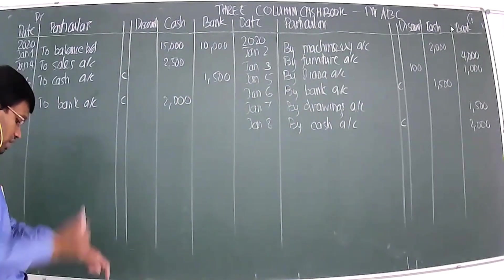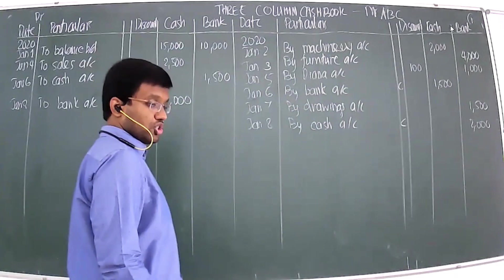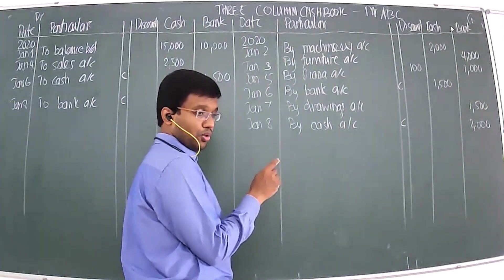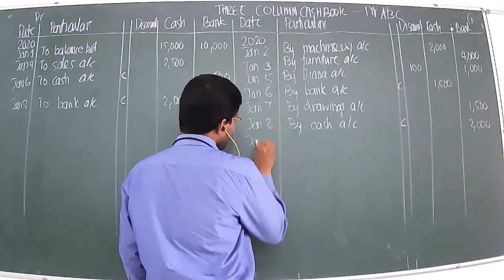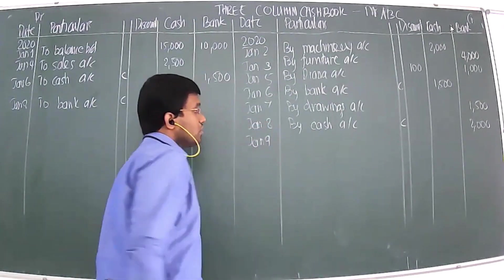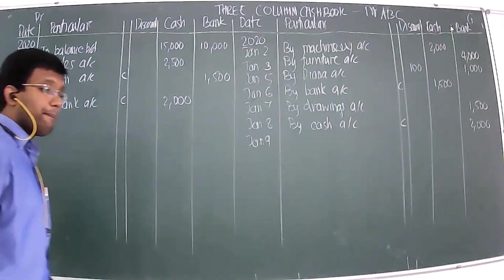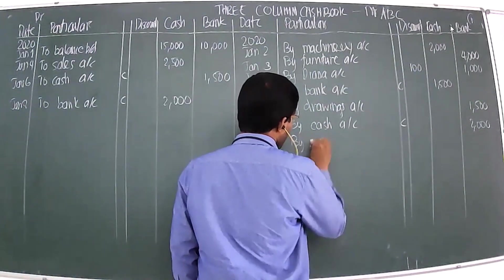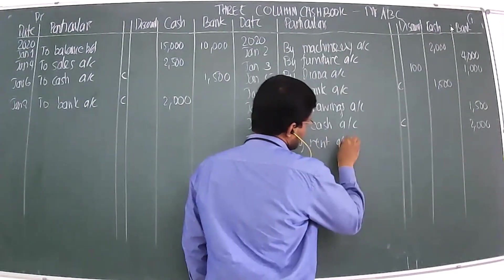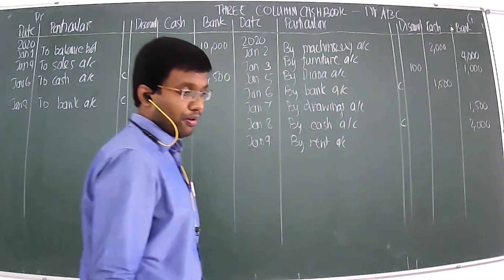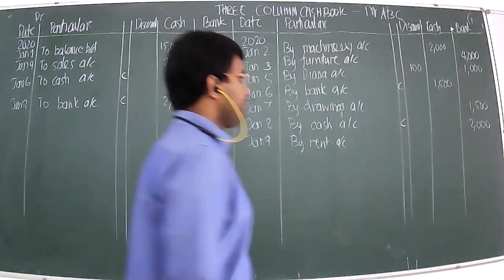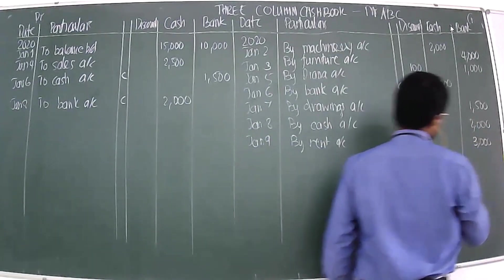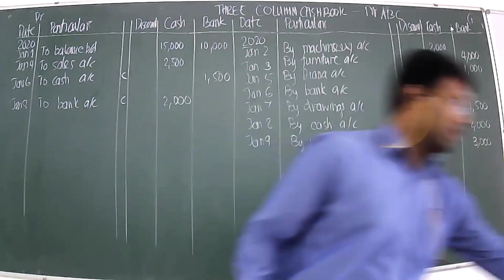January 9th: paid rent by cheque ₹3,000. Since payment is made by cheque, the amount goes out from the bank column. Entry: By Rent Account, ₹3,000 in the bank column.